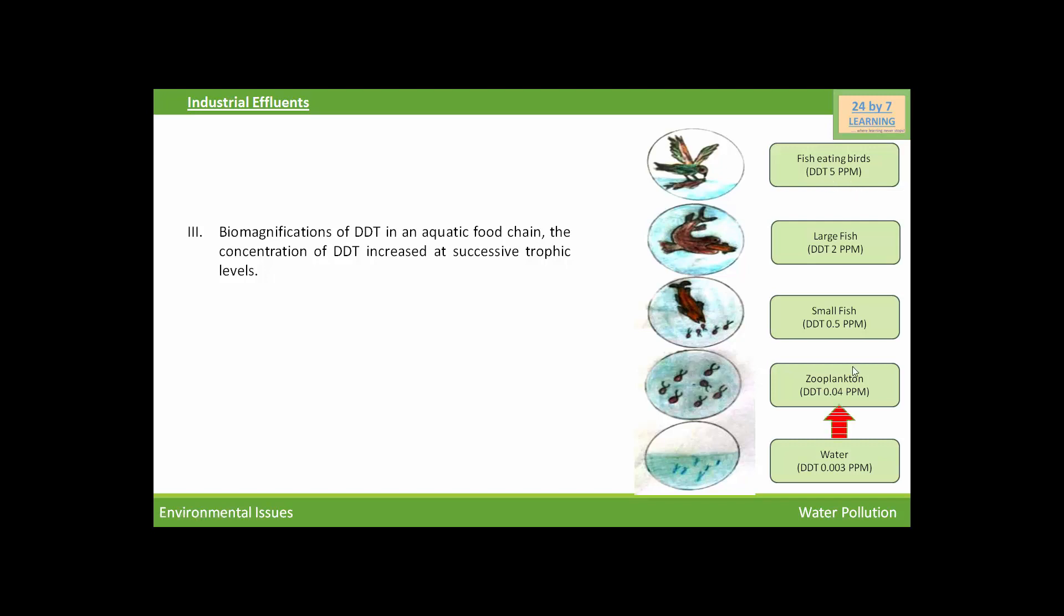The concentration of DDT increases at successive trophic levels. High concentrations of DDT disturb calcium metabolism in birds, which causes thinning of eggshells and their premature breaking, eventually causing decline in bird populations.